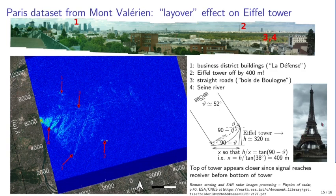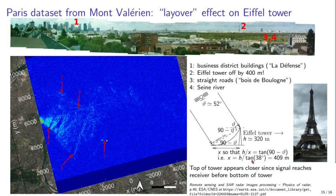We were initially disappointed not to see the Eiffel Tower prominently — a large metal structure in central Paris. However, we found a triangular-shaped reflection slightly closer than the expected range. The Eiffel Tower is ~320 m high, so the incoming wave hits the top before the bottom, elongating the return in the range direction. Given the illumination geometry, the top appears ~400 m closer than the geometric location — the well-known layover effect, documented by ESA.